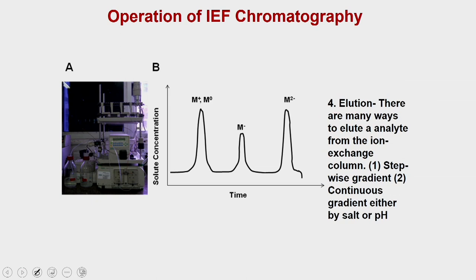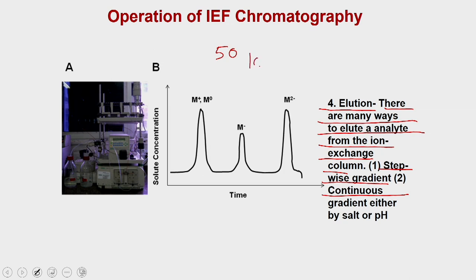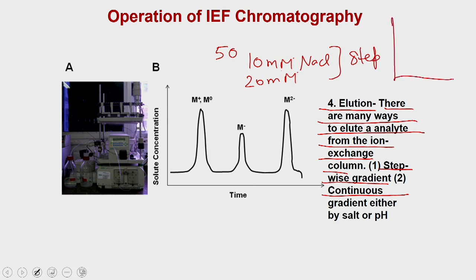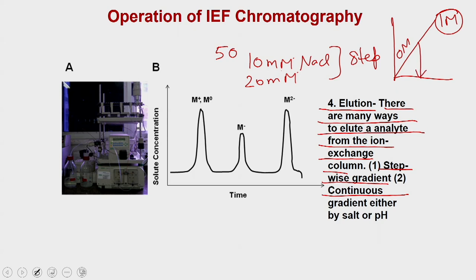Once the protein binds to the column, you proceed to elution. There are many ways to elute an analyte from the ion exchange column. One is a stepwise gradient — for example, 10 mM NaCl, then 20 mM NaCl — at very discrete steps. The other is a continuous linear gradient, for example from 0 M to 1 M NaCl, which allows you to optimize at what NaCl concentration you can get the protein of your interest.